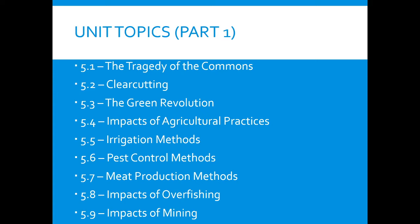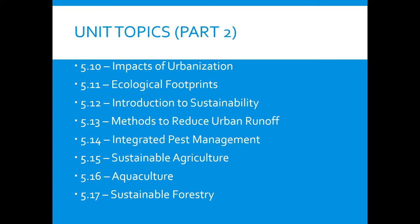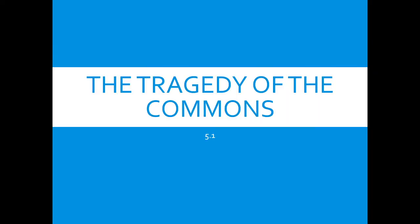With that, let's look at all of the unit topics — notice this is part one, because there are so many topics: tragedy of the commons, clear-cutting, the green revolution, impacts of agricultural practices, irrigation methods, pest control methods, meat production methods, impacts of overfishing, impacts of mining, impacts of urbanization, ecological footprints, introduction to sustainability, methods to reduce urban runoff, integrated pest management, sustainable agriculture, aquaculture, and sustainable forestry. With that, we're going to start with our first part.